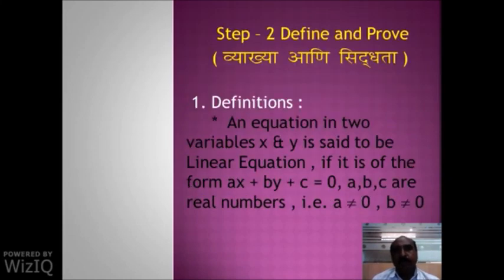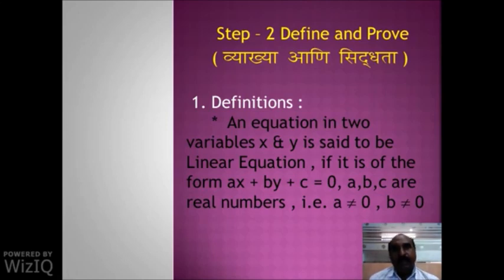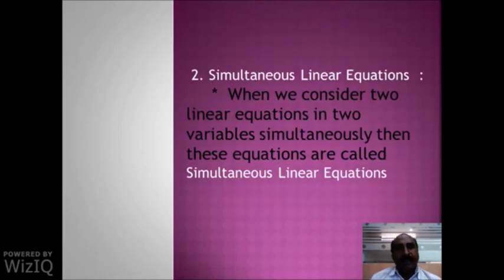Now, Step 2: Define and Prove. In this step we will see some definitions. First, an equation in two variables x and y is said to be a linear equation if it is of the form ax plus by plus c equals 0, where a, b, and c are real numbers, with a not equal to 0 and b not equal to 0. Definition 2: Simultaneous linear equations — when we consider two linear equations in two variables simultaneously, these equations are called simultaneous linear equations.